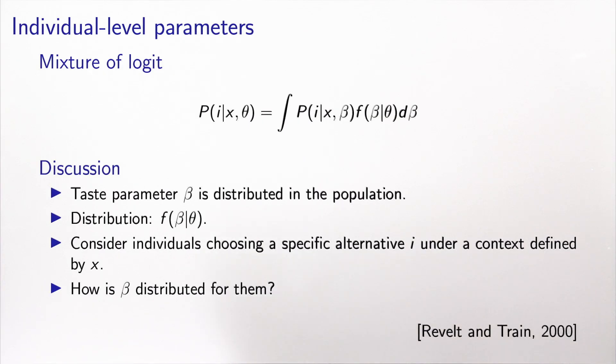The idea of mixture of logit is that the choice model assumes that some parameters, beta, are distributed in the population. And conditional to the value of beta, we have a logit model, and then we have a density here, a distribution for beta, that may depend on something that is called the d-parameters, theta. We have seen how to specify these models, we have seen how to estimate them, how to calculate the integrals, and so on.